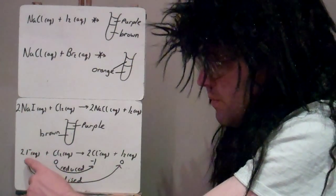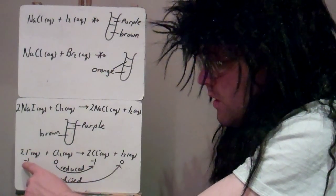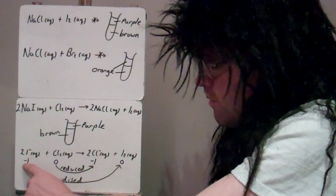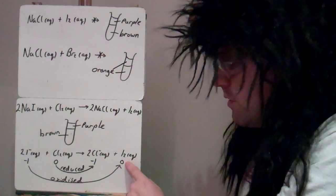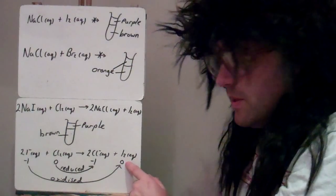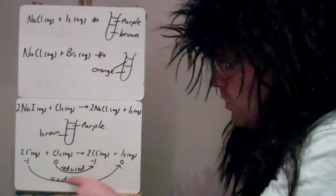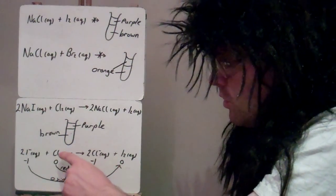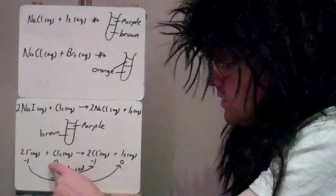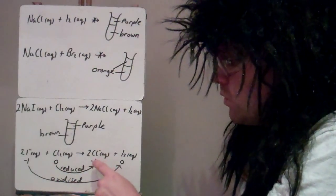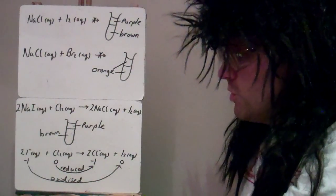Looking at oxidation numbers: the iodide goes from −1 to 0 as iodine, so it's been oxidised. The chlorine goes from 0 as Cl₂ to −1 as chloride, so it's been reduced.